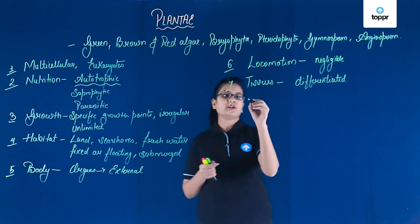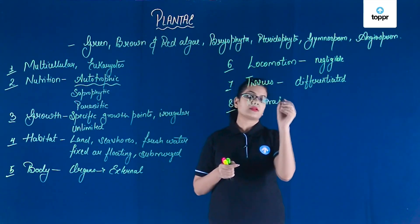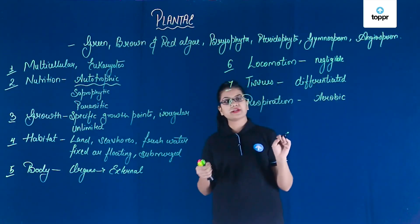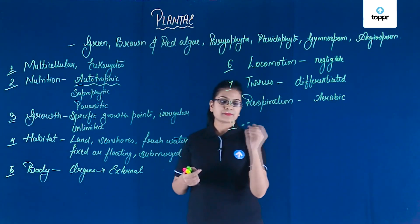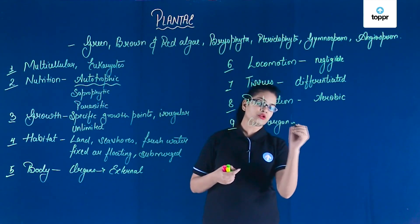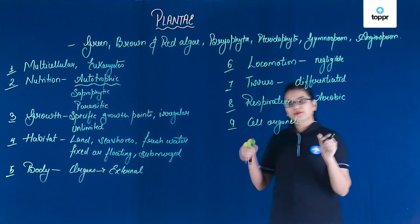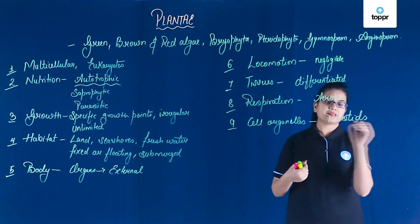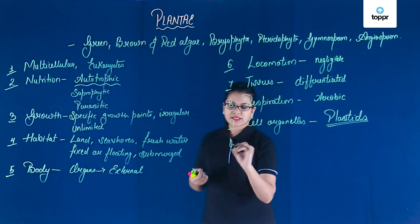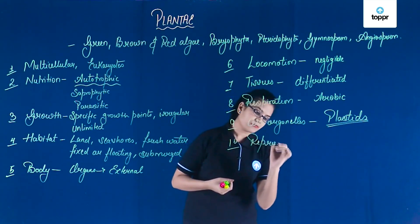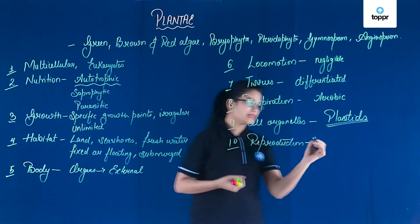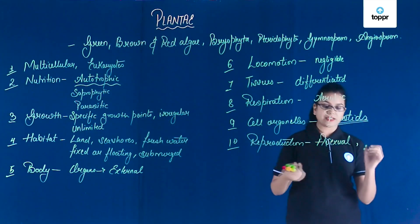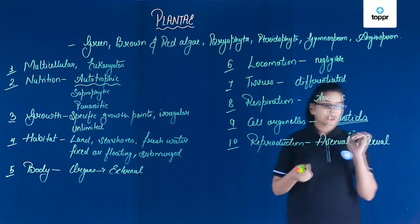Learning about respiration, plants usually show aerobic type of respiration. When we talk about cell organelles, most plants have all the cell organelles present as in eukaryotic cells. Apart from the other cell organelles, plants have plastids — this is a special characteristic. Under reproduction, plants perform both sexual and asexual types of reproduction. Asexual reproduction can be seen in a number of algae, whereas in higher plants you will mostly see sexual reproduction.